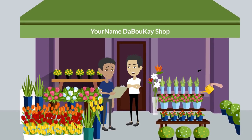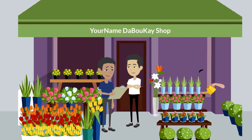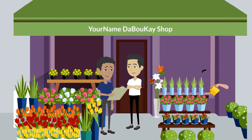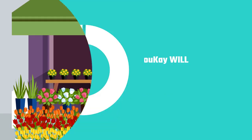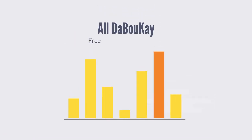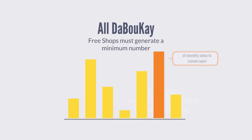Shop owners set their own prices and will receive sales revenue in real time. The Bouquet will retain a percentage of each sale. All free Bouquet shops must generate a minimum number of monthly sales to remain open. New shops will be limited to 20 digital products to start.